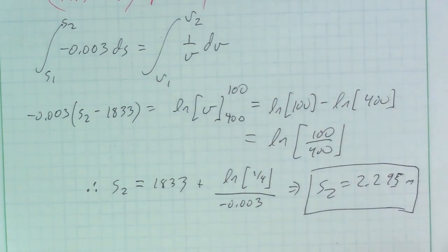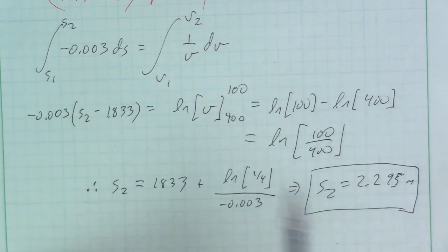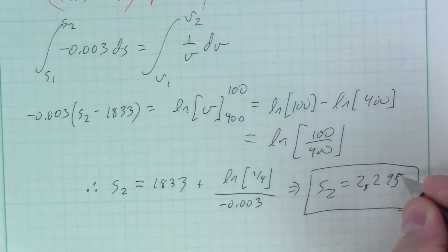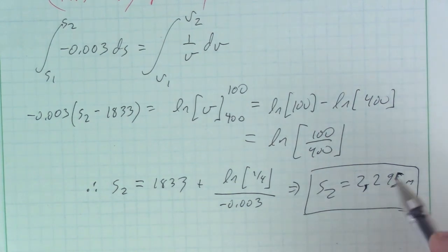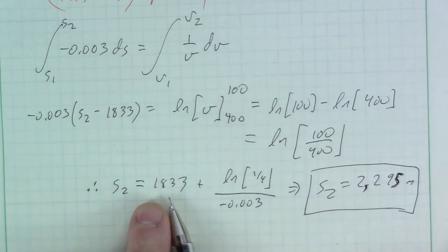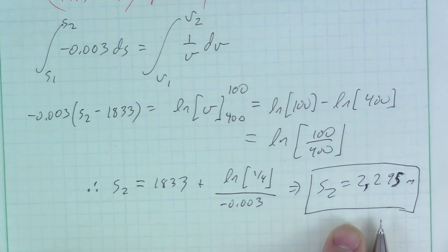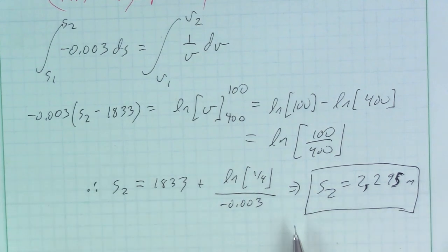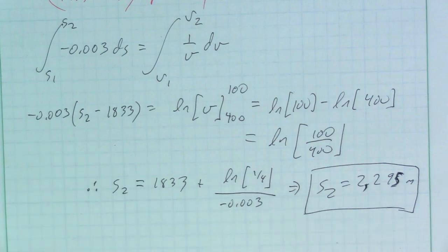This gives S₂ = 2,295 meters — about 2.3 kilometers total distance traveled. By setting S₁ = 1,833 meters as the initial position for phase two, S₂ directly gives the total distance from the start, not just the phase two distance. Remember: even while decelerating, the rocket car is still moving forward and gaining extra distance as it slows down. That's it for our kinematics examples.